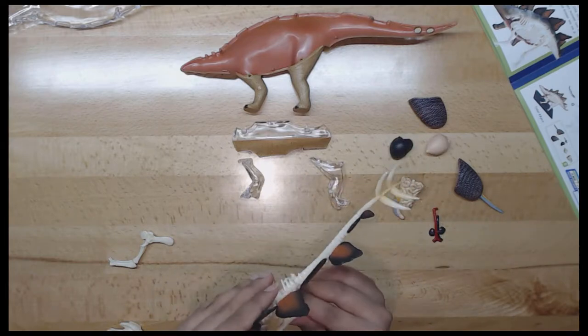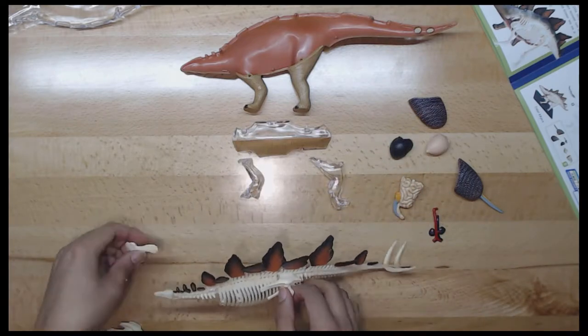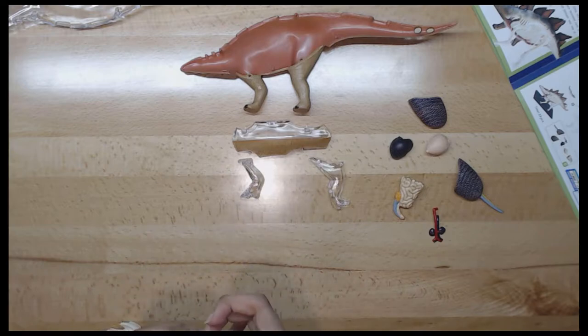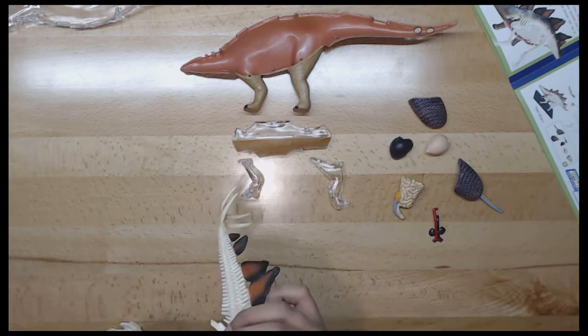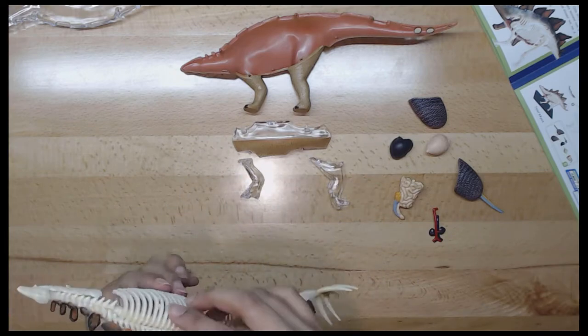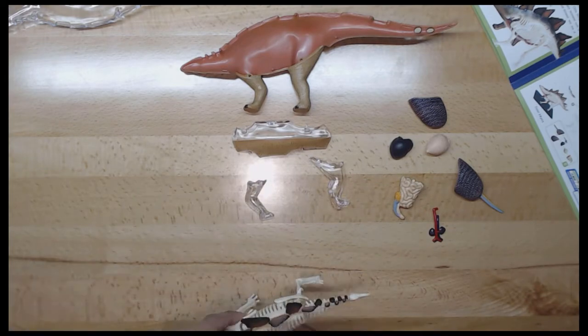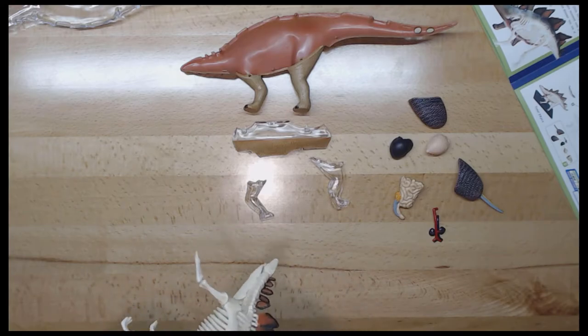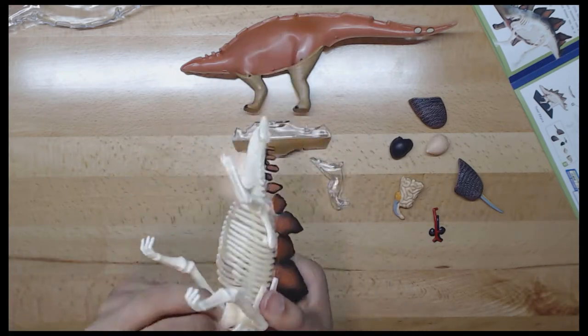Next is the skeleton. Stegosaurus had a distinctive and unusual posture, with a heavily rounded back, short fore, strong and long rear legs, head held low to the ground no more than one meter or three feet high, and a stiffened tail held high in the air.